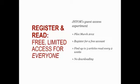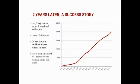Register and Read — free, limited access for everybody. This was an experiment we launched in March 2012, piloting with 76 journals from a select group of publisher partners. Users land on an article view page through search referrals, and without institutional access, they're shown the option to buy the article or read it for free. JSTOR now allows up to three free reads over a two-week period, so users can read up to 78 articles per year for free. Following the pilot, we added about 1,000 journals to the program.